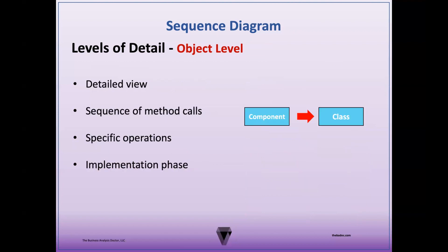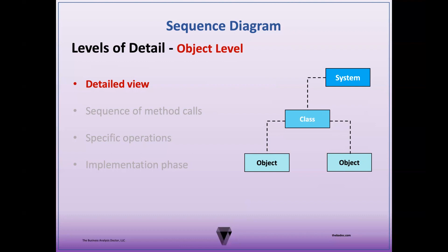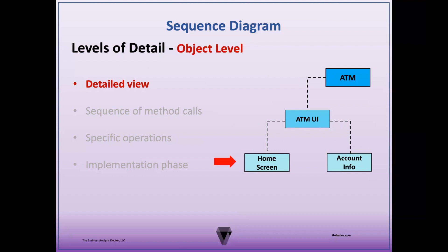Now let's discuss the object level. Here, the components within the system are referred to as classes. Classes define a common structure and behavior that multiple objects can share. In the object level, we decompose the classes into objects, creating a more detailed view of the sequence diagram. The focus is on the interactions and messages exchanged between objects rather than the classes themselves. Continuing with our ATM example, the ATM user interface can be decomposed into various screens such as the home screen and the account information screen.